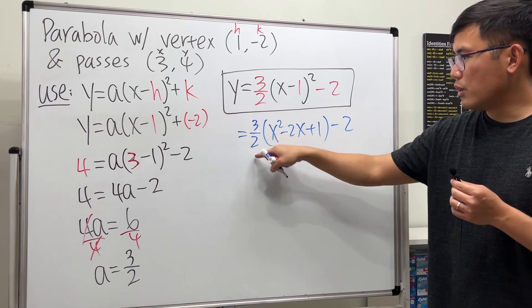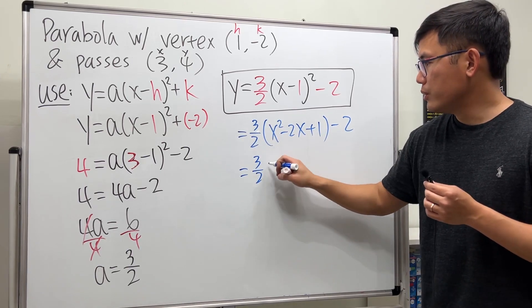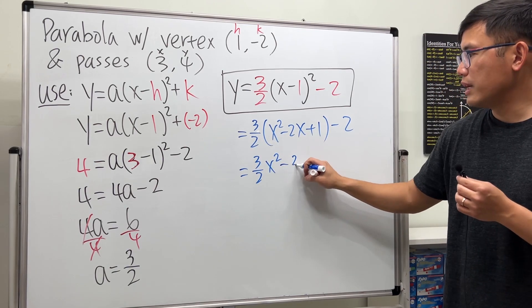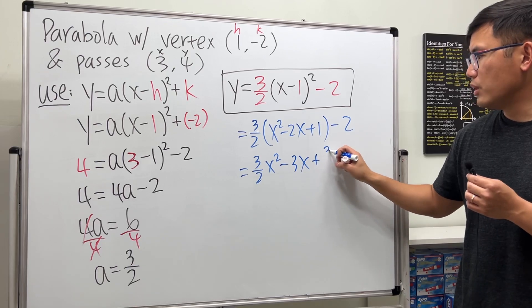And then distribute the 3 over 2. We get 3 over 2 x squared, the 2s cancel so we have minus 3x, and then this times that we get plus 3 over 2.